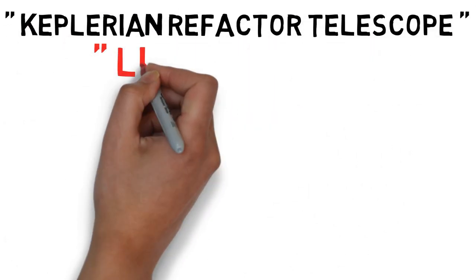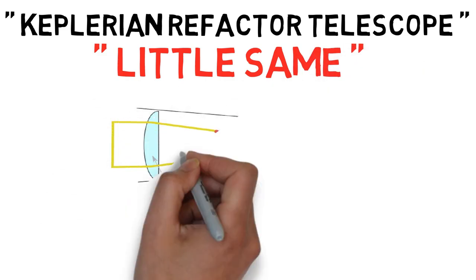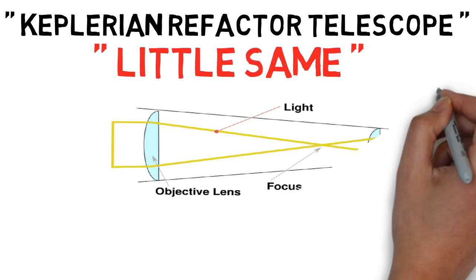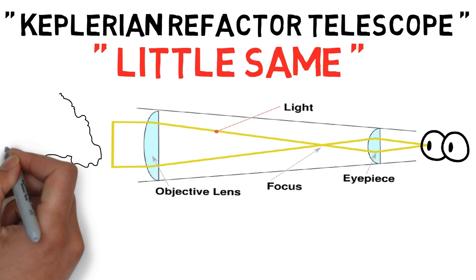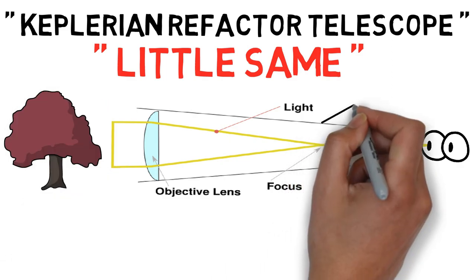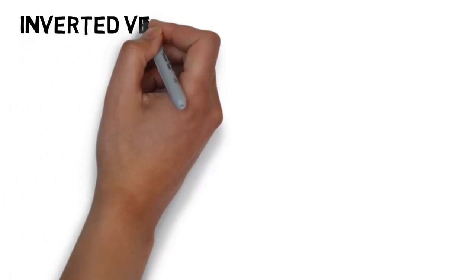Keplerian refractor telescope. The Keplerian refractor telescope is pretty much the same as the Galilean refractor telescope, but it has a longer pipe. The concave lens or eyepiece is placed a little far from the objective, which in the image, as you can see, creates a focal point. And the light goes into the eyepiece, which creates a better image than the Galilean refractor telescope.